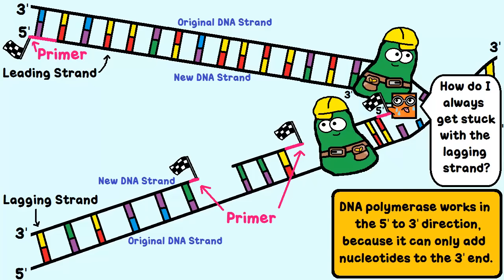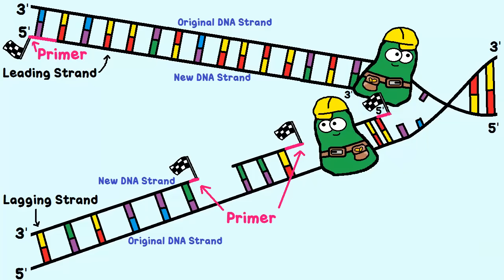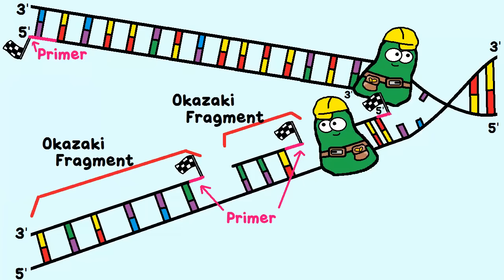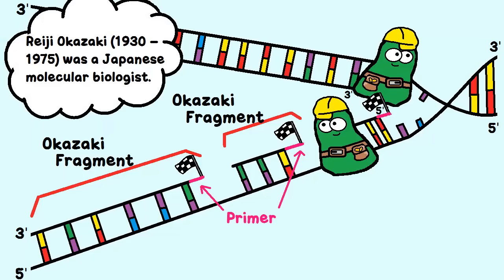On the lagging strand, you tend to get these little fragments of synthesized DNA — they're called Okazaki fragments. Amazing name. The primers have to get replaced with DNA bases, since the primers were made of RNA. Ligase has to take care of the gaps in the Okazaki fragments.